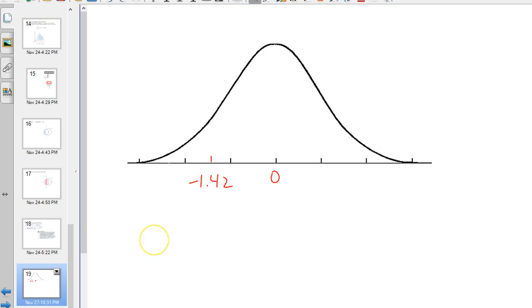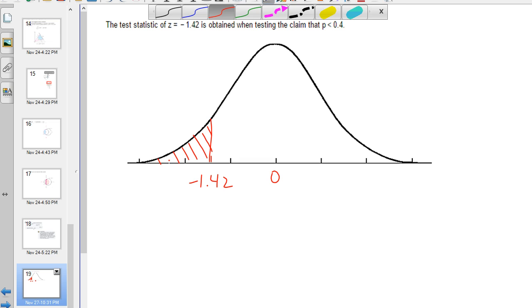Just a visualization here was negative 1.42 and that was our test statistic. The p-value is anything as extreme or more extreme than this. Because it told us the alternate hypothesis was that we're testing the claim that p was less than 0.04, this was the test statistic that we got. So the p-value is everything as extreme, meaning where you are, or more extreme, meaning further away from the claim value. So that's the area we're looking for.